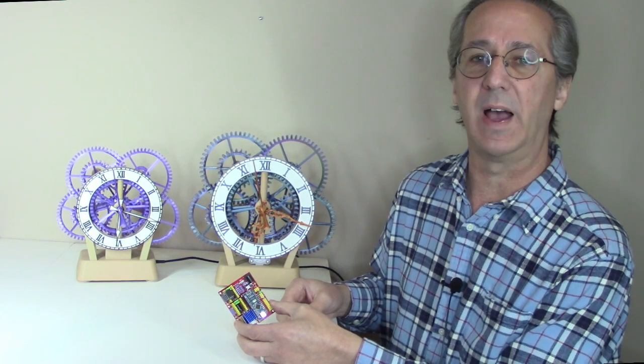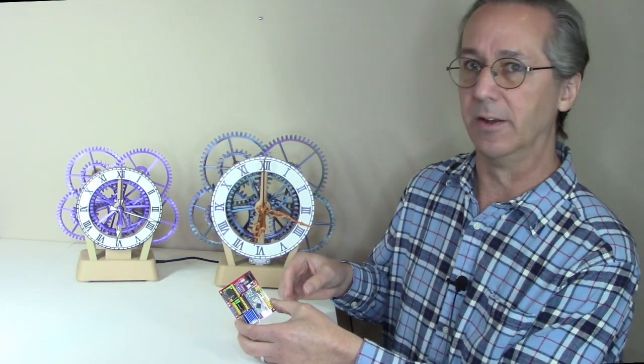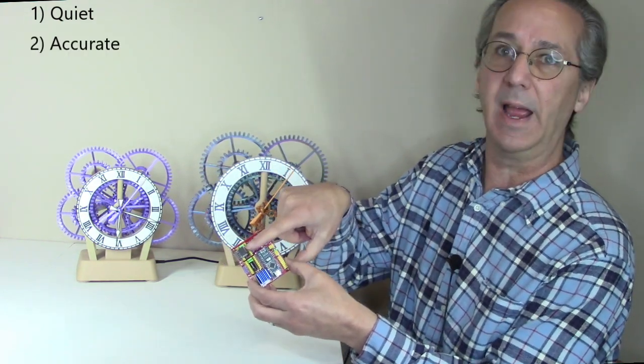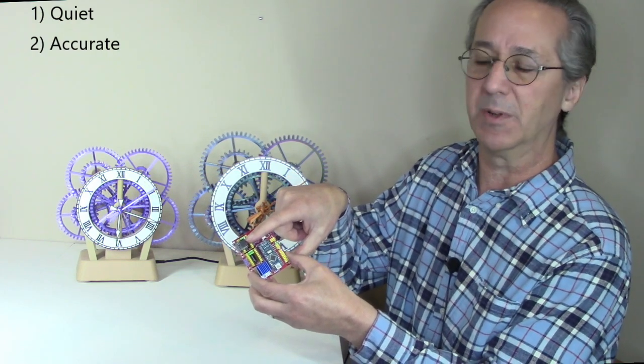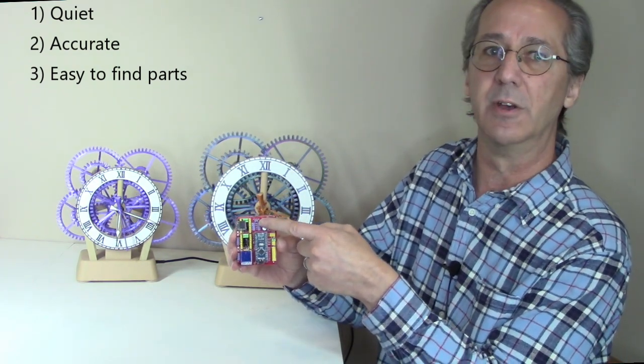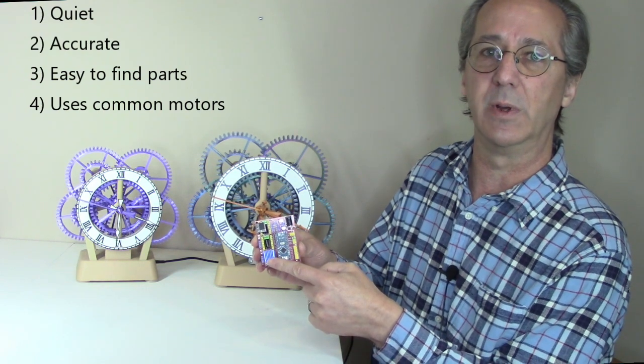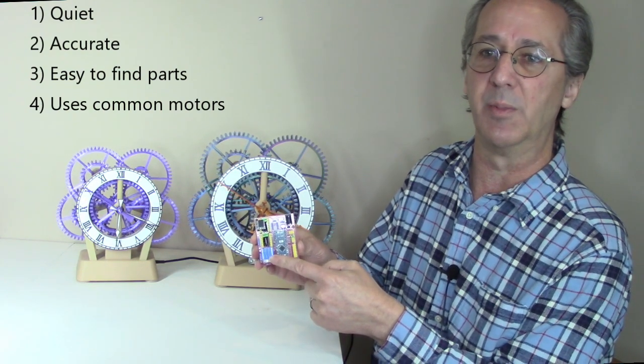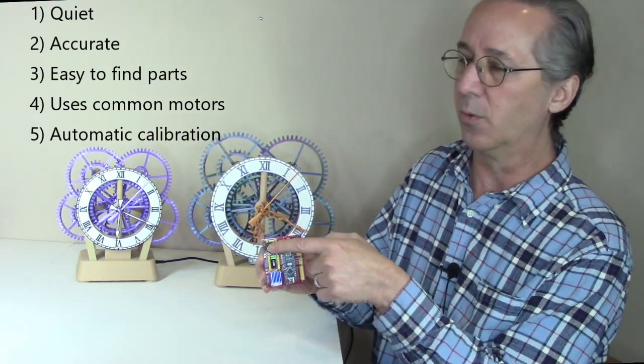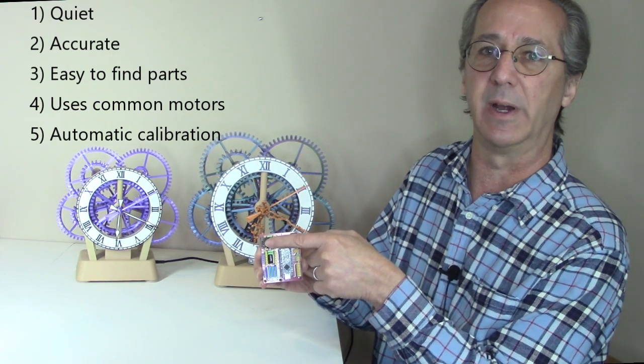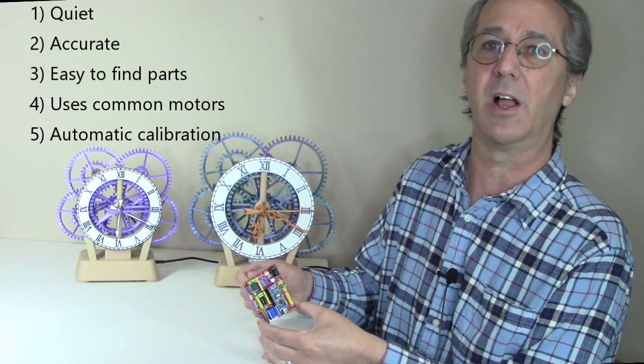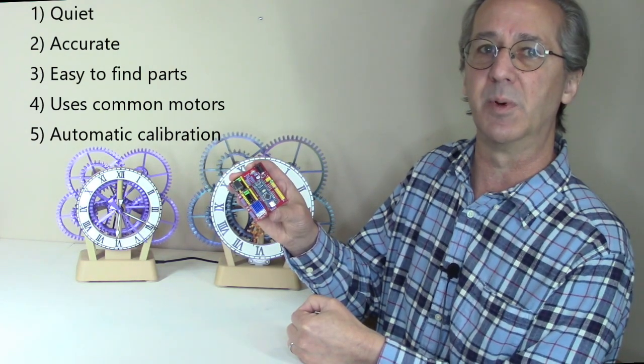This new clock driver module improves five things on the existing design. For one, it's really quiet thanks to the TMC 2208. And it's super accurate thanks to the precision real time clock. It doesn't use a custom circuit board thanks to the CNC Shield V4. Also, the TMC 2208 runs almost any stepper motor that's out there. And the calibration routine is simple because the Arduino works with the real time clock to automatically calibrate. So this design becomes my quietest and most accurate clock all by changing to this new stepper motor driver circuit.